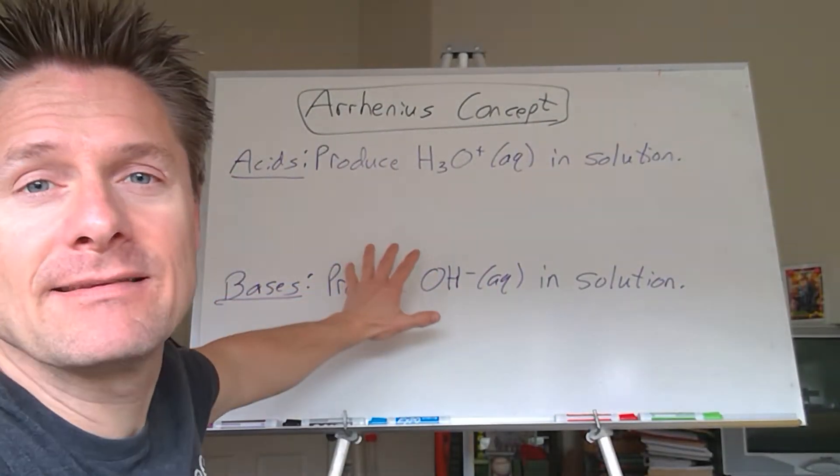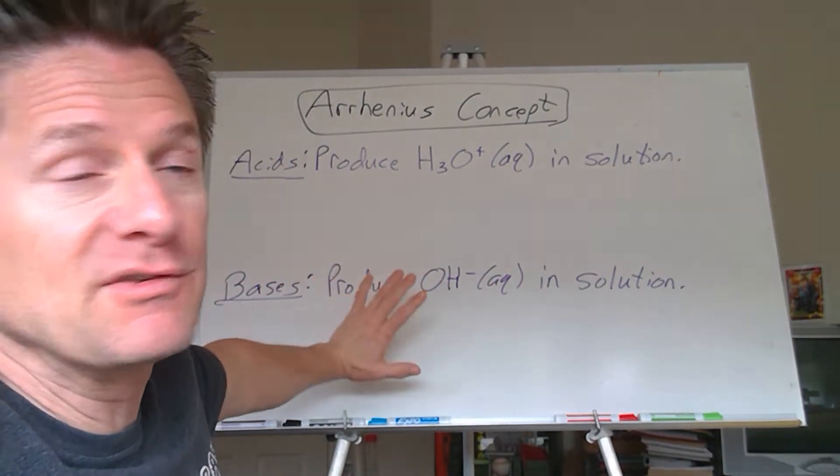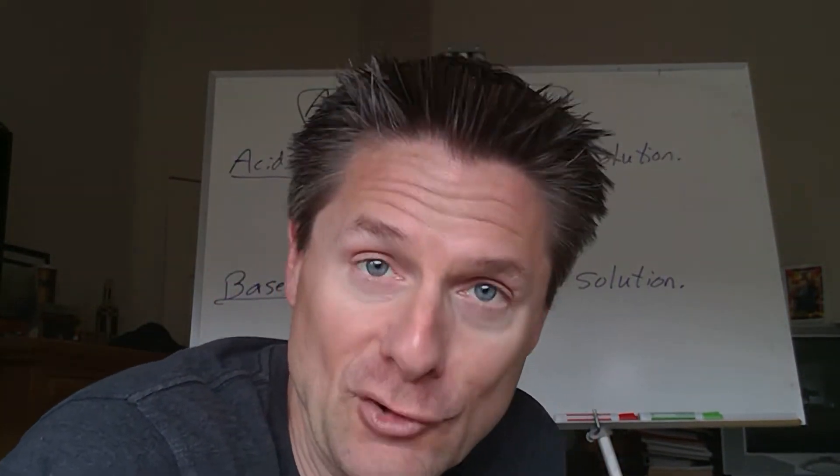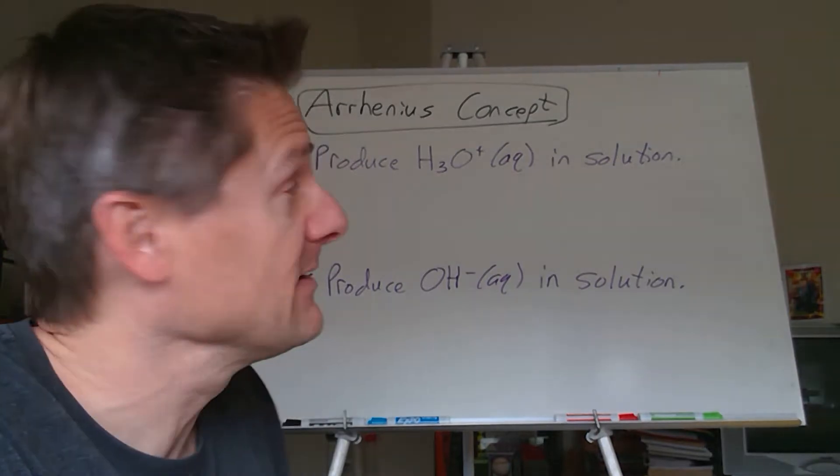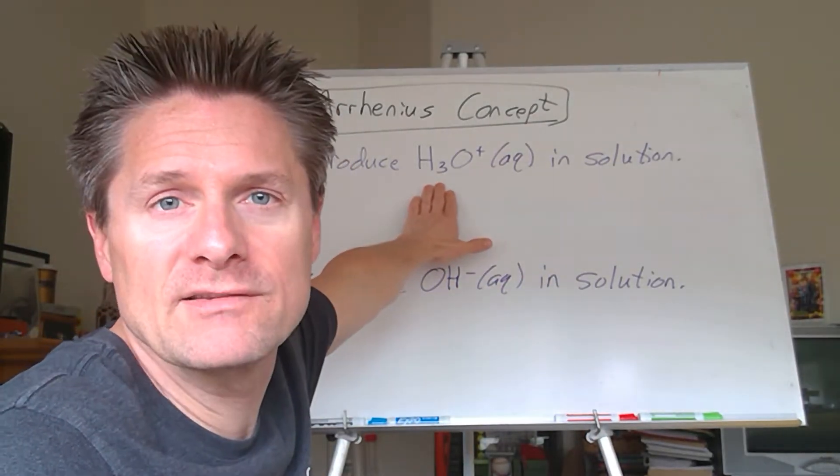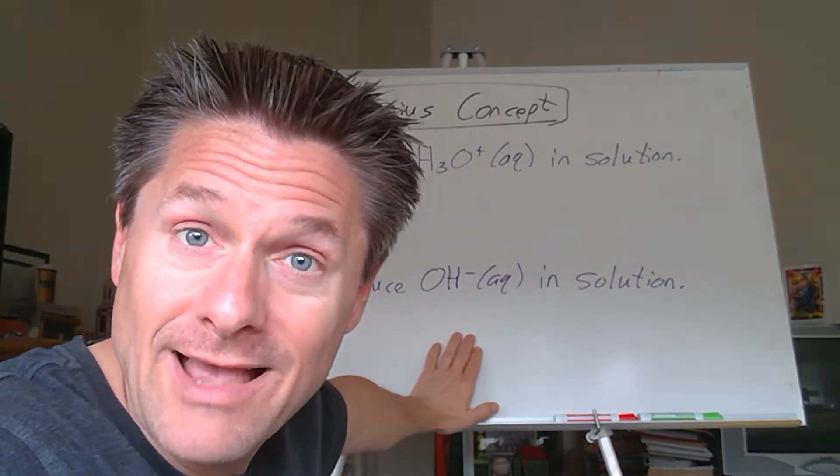Let's start with the Arrhenius concept. Ready for model number one? Review the Arrhenius concept of acids and bases. Guess who put this one together? Svante Arrhenius. You're going to see that name pop up all over the place. So the way Svante Arrhenius pictured acids versus bases is what they produced if you put it in water to make a solution. Acids produce H+ aqueous, the hydrogen ion. Whereas in general chemistry, it's better to use the hydronium ion H3O+ in solution. Whereas bases produce the hydroxide ion OH- in solution.